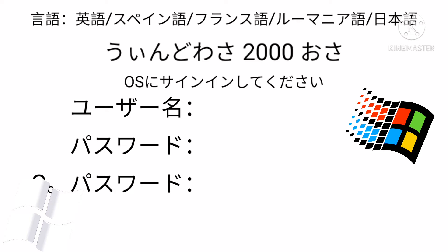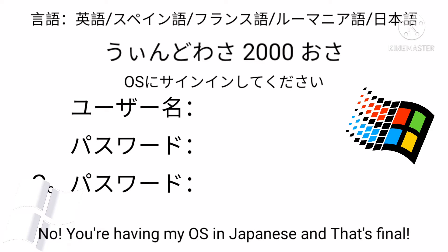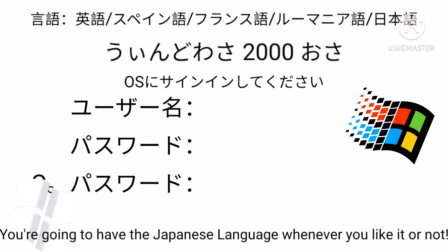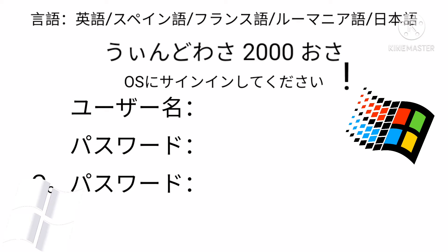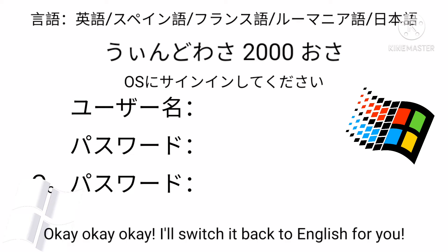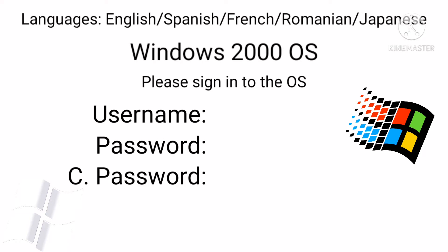Fine. I'll sign in to it. I don't want the Japanese language. Switch it back to English right now. No — you have my OS in Japanese and that is final. Listen Windows 2000, if you don't switch it back to English, then I will lend support on you. OK. Switching back to English. There. How's this? That's more like it. Now I will sign in to my account.